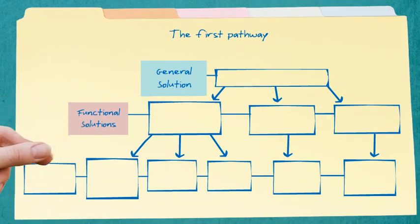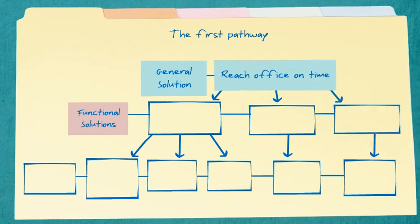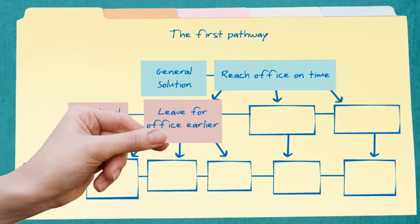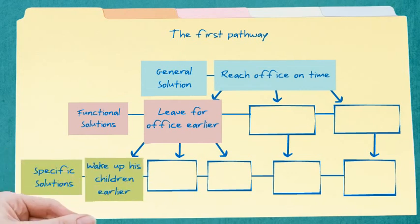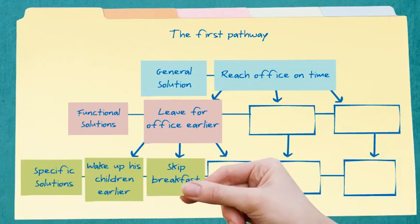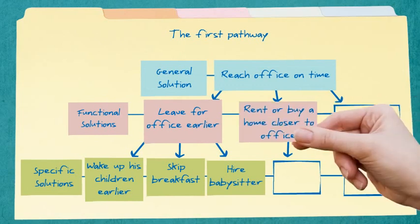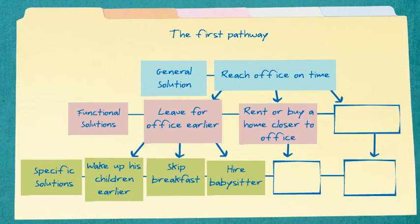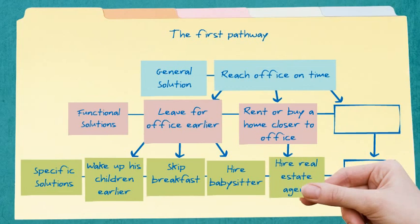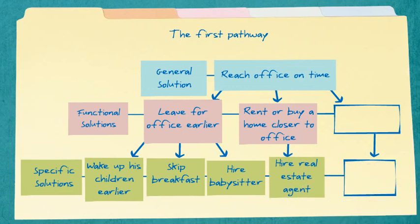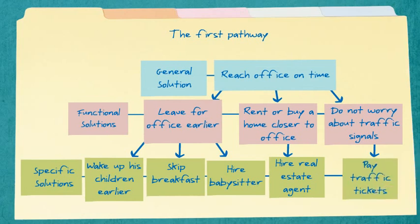The functional solutions to ensure Mark reaches the office on time are: Mark leaves for the office early, for which he would need to wake up his children earlier, skip his breakfast, or hire a babysitter. Alternatively, he can shift his residence closer to the office to save on travel time. Another option would be to ignore traffic signals and pay for traffic tickets, but this violates safety considerations and must not be considered.